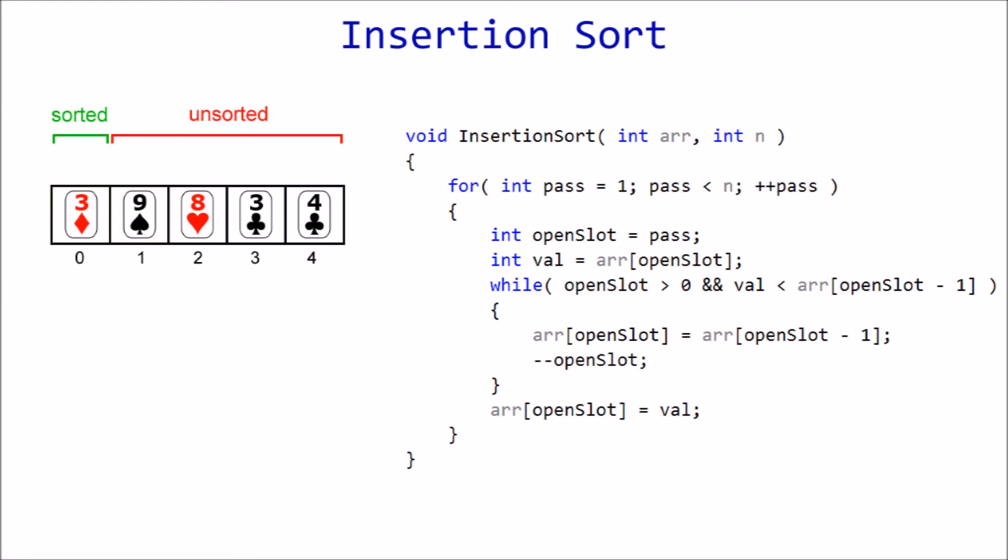Card to insert is represented by a variable named val, because it refers to the value we want to insert. Slot minus 1 refers to the element preceding the open slot, the one we compare against.